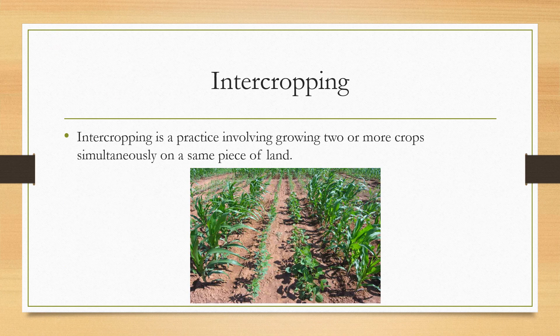Coming to intercropping, here you can see in the picture that one crop — maize — is grown with another crop simultaneously on the same piece of land. This is called intercropping.